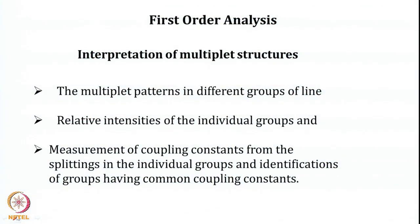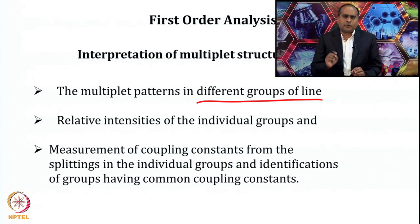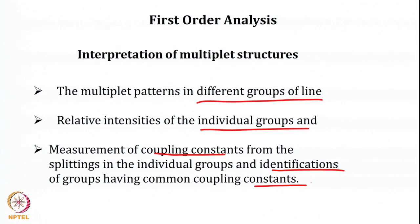Today we are going to continue with this and discuss in detail the first order analysis of the spectrum and how we interpret the first order spectrum. We will discuss interpretation of multiplet structures — multiplet patterns in different groups of lines — how to interpret them, the origin of relative intensity of individual groups, how to measure the coupling constant between lines, and how to identify groups having a common coupling constant.